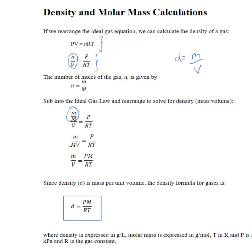I've cleaned it up here and moved my molar mass over to the right-hand side. Now what I have is a relationship: m over V is equal to pressure times molar mass divided by R times T. You'll recognize from our previous discussion that this is density. So therefore, density in grams per liter is equal to the pressure of the gas times its molar mass divided by R times T.